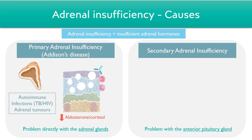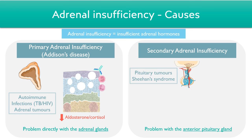Turning towards secondary causes, in this case there's a problem with the anterior pituitary gland, such as a pituitary tumour or Sheehan syndrome, which is a condition involving reduced levels of pituitary hormones in the blood following childbirth. In this case, the pituitary gland releases less ACTH, and that affects the adrenal glands, causing them to release less aldosterone and cortisol, which leads to insufficiency symptoms.